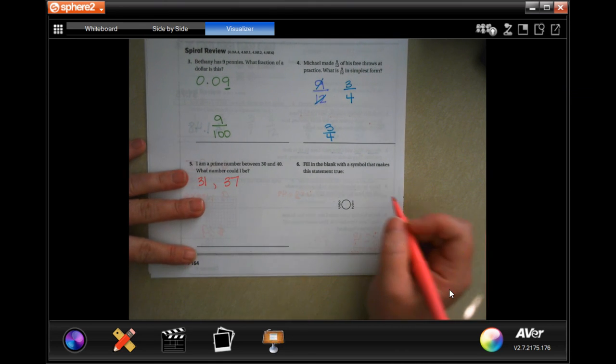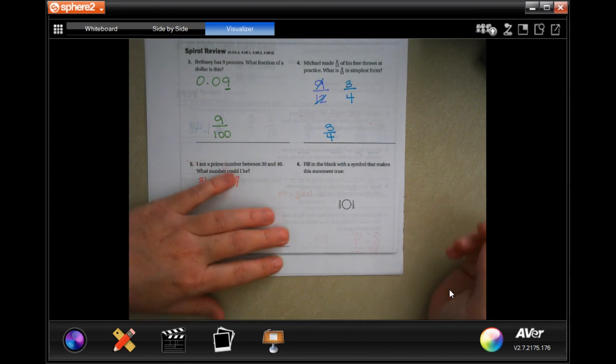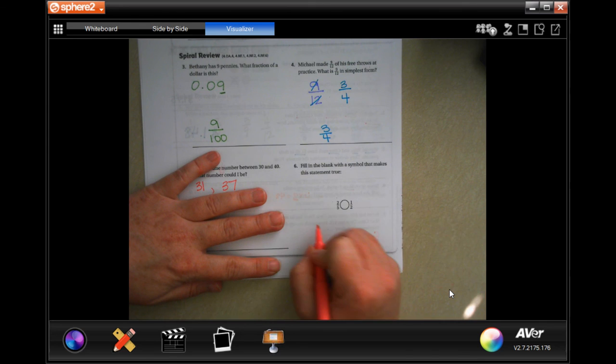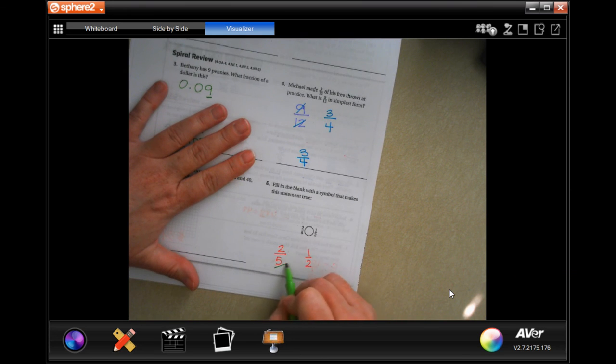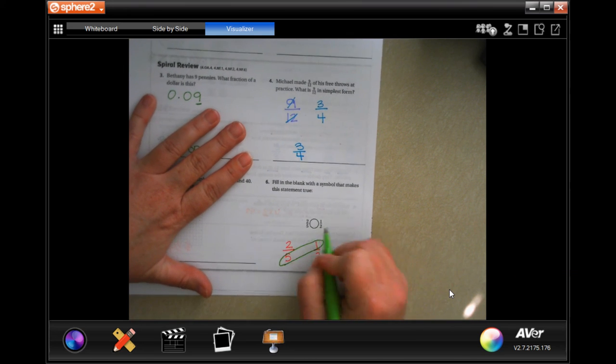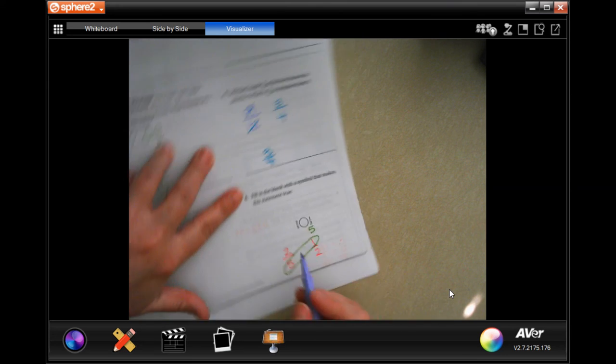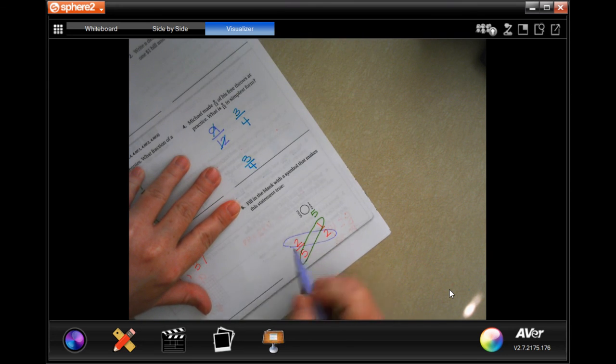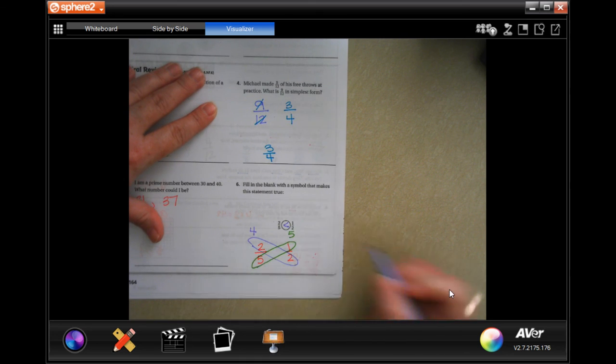Fill in the blank with a symbol that makes a statement true. This is actually a fun way to do this. So I'm going to write those numbers right here. We are going to do our butterflies straight across. Five times one is five, and two times two is four, which means that this one is bigger. Boom, done.